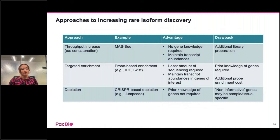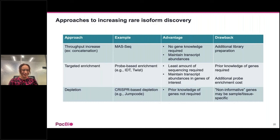For rare isoform discovery, there are several approaches. First, you can sequence more — increasing molecular yield through methods like MaSeq — which requires no prior gene knowledge and maintains transcript abundances, though it requires extra library preparation. Alternatively, you can enrich using probe-based enrichment, which requires the least sequencing but requires a priori knowledge of genes of interest. The opposite approach is to deplete uninformative genes using CRISPR-based depletion such as JUMPCODE kits, though non-informative genes may be sample and tissue specific.